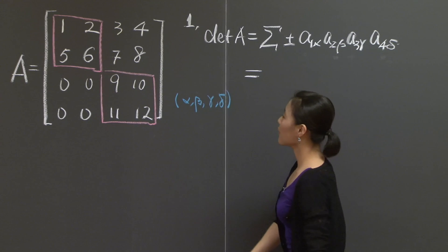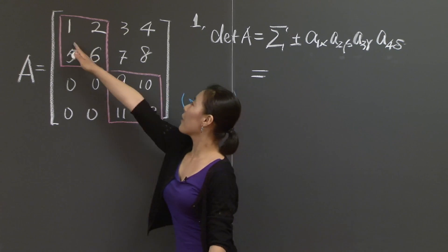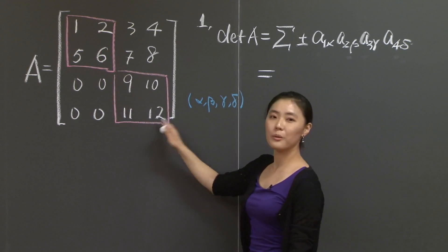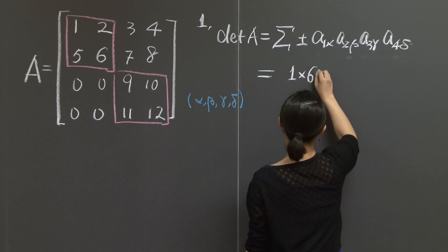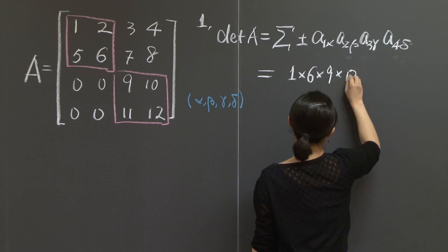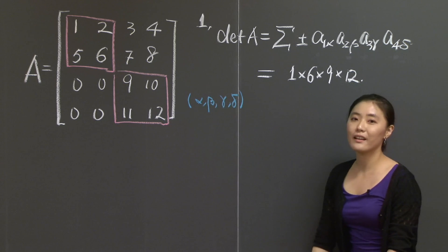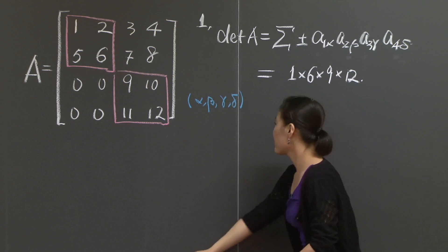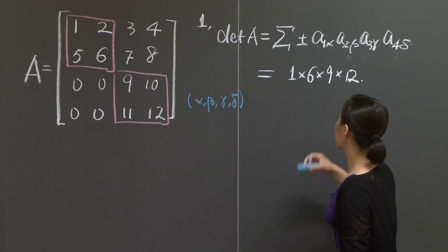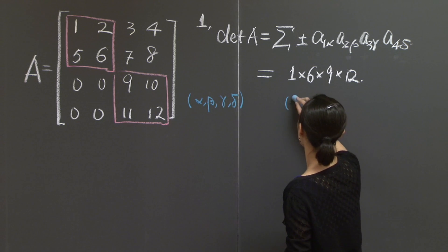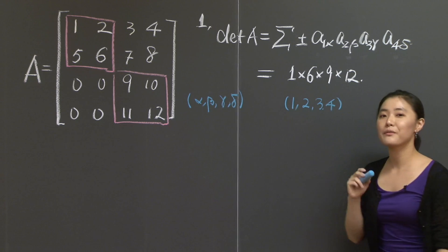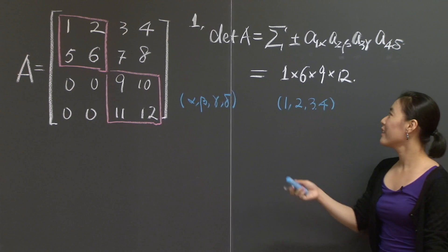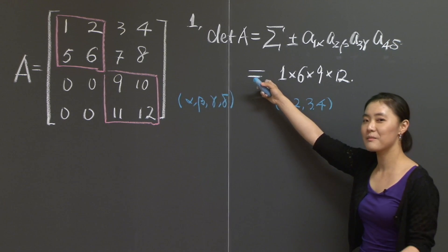Let's put them down. We start with this choice, 1-6, 9-12. So that's 1 times 6 times 9 times 12. These are from diagonal, so of course these coordinate numbers will just be A11, A22, A33, A44. This is a perfect alignment of 1, 2, 3, 4. So the sign of this term is just a plus sign.